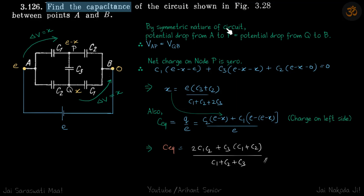By symmetric nature of circuit, potential drop from A to P is equal to potential drop from Q to B. If this is X, the potential drop across C1 is X minus 0. Here also the difference has to be X, so if this is E, this has to be E minus X. First we write 0 and E, then we write X, and then by anti-symmetry, if this difference is X, this should also be X, so this has to be E minus X. That is the order: 0, then E, then X, then E minus X.